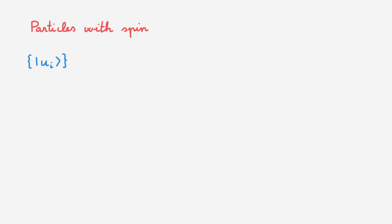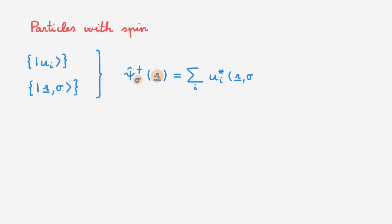We again consider a discrete basis U and our new augmented position basis for spinful particles. We now write the creation field operator as psi_sigma dagger of R, where the sub-index sigma labels the discrete spin degree of freedom and R labels the continuous position degree of freedom. Extending our original definition, we can write it as the sum over the wave functions of the U basis times the associated creation operators in the U basis. Similarly, we define the annihilation field operator for spinful particles as the corresponding sum in terms of annihilation operators in the U basis.